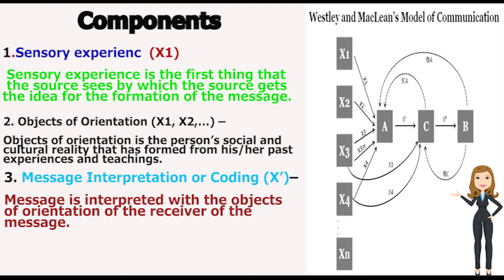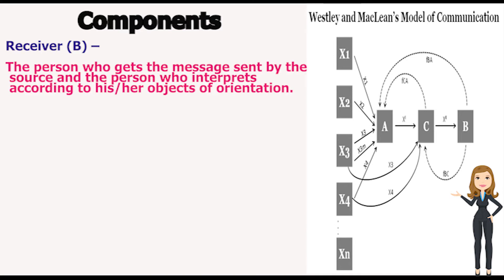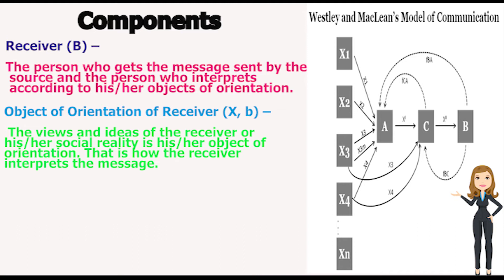X is denoted by coding. If you can see the diagram, X stands for coding. Message interpretation or coding means the message is interpreted with the objects of orientation of the receiver of the message. B stands for receiver — the person who gets the message sent by the source and interprets it according to his or her object of orientation. X at B stands for the object of orientation of the receiver, meaning the views and ideas of the receiver, or his or her social reality, is their object of orientation. That is how the receiver interprets the message.